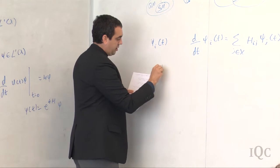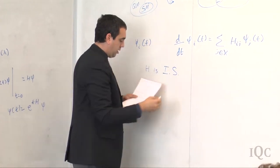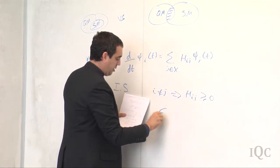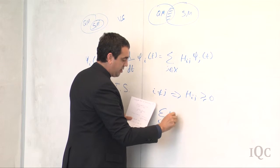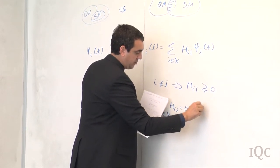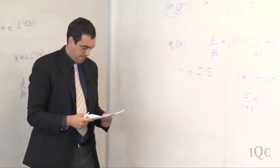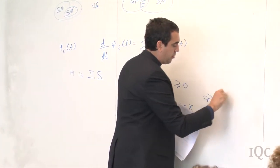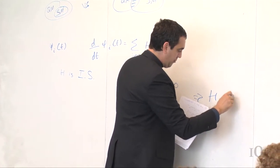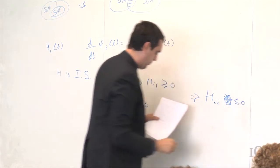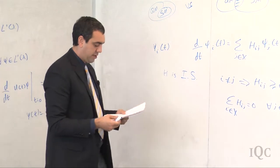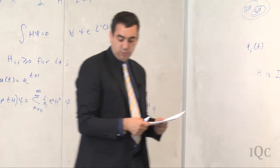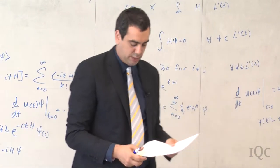H is infinitesimal stochastic if i ≠ j implies H_{ij} ≥ 0, and Σ_i H_{ij} = 0 for all j in X. These facts imply that the diagonal entries of H are at most zero. The solution of the master equation — which looks like the solution of Schrödinger's equation — generates a Markov process via the semigroup. Noether's theorem is all about conserved quantities: observables whose expected values don't change with time.